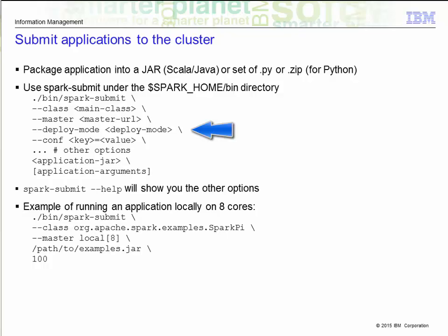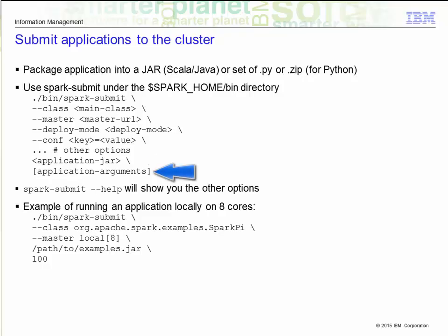The deploy mode is whether you want to deploy your driver on the worker nodes cluster or locally as an external client. The default mode is client. The conf option is any configuration property you wish to set in key-value format. The application jar is the file that you packaged up using one of the build tools. Finally, if the application has any arguments, you would supply them after the jar file. Here is an actual example of running a Spark application locally on 8 cores. The class is org.apache.spark.examples.SparkPi. Local 8 means to run it locally on 8 cores. The examples.jar is located on the given path with the argument 100 passed into the SparkPi application.